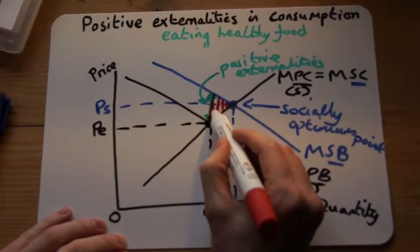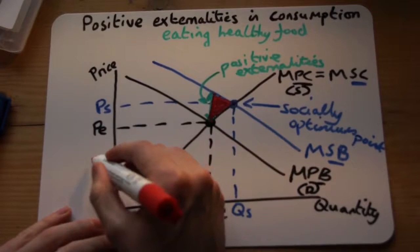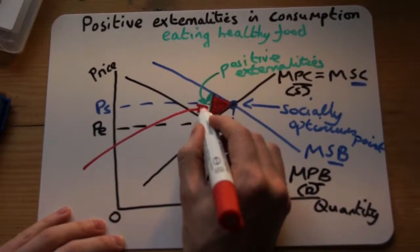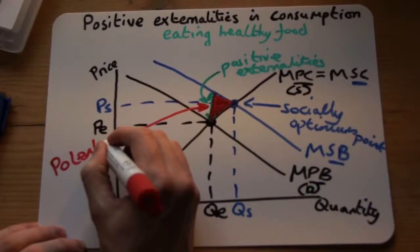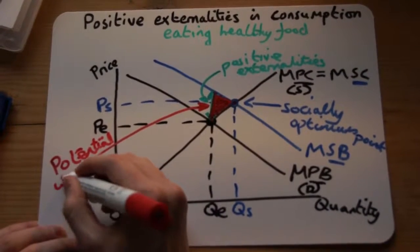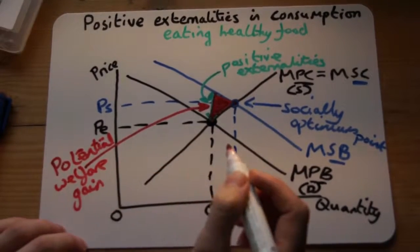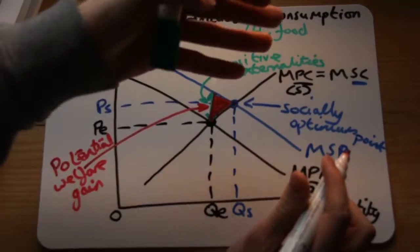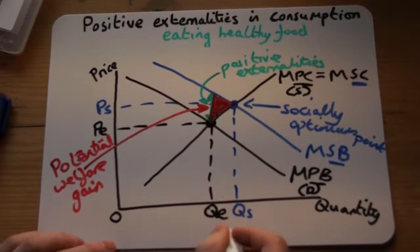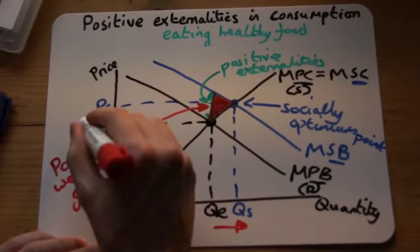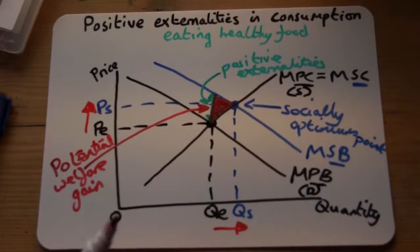So it's simply just this triangle here. For positive externalities in consumption, that is our potential welfare gain — what we could gain if we understood the true benefits to everybody of eating healthy food. We'd consume more, pay a slightly higher price, and we would be better off for society.